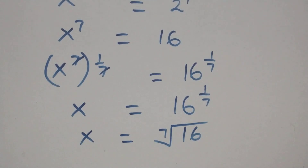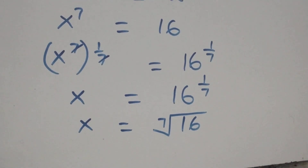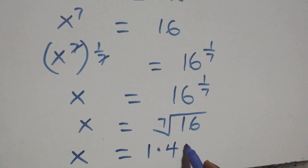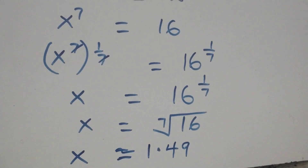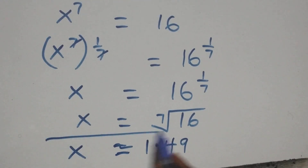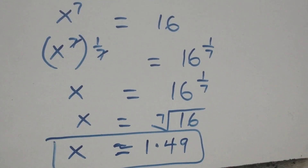From here we can get the approximate answer. We have x equals 1.49, approximately. That is, here we have the value of x as x equals to 1.49.